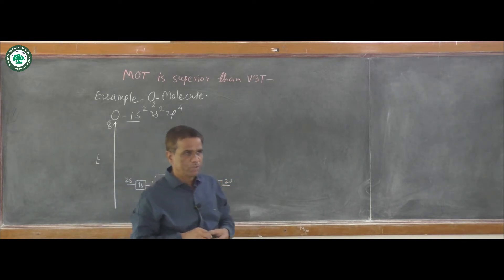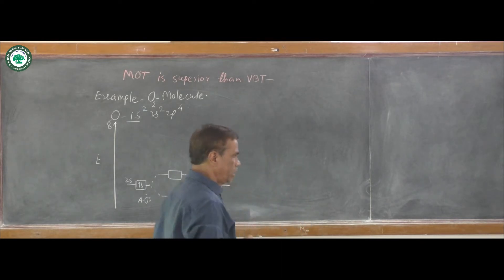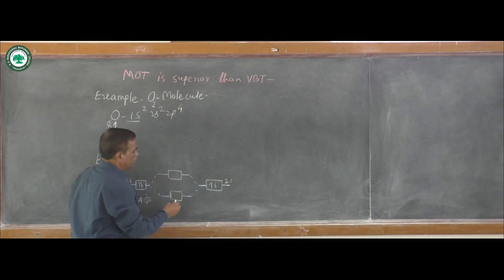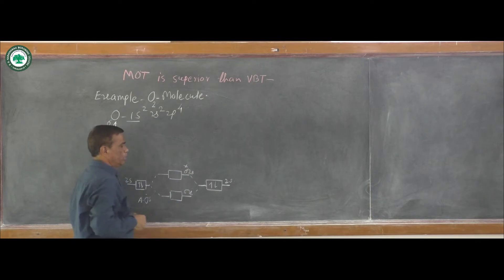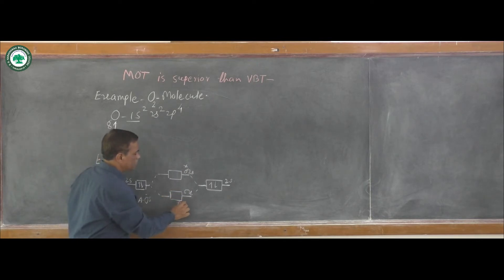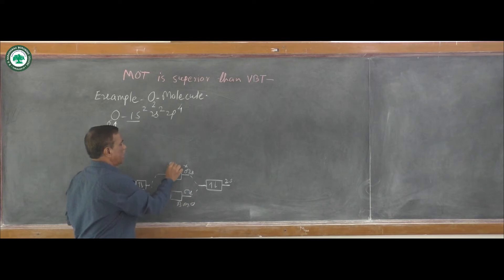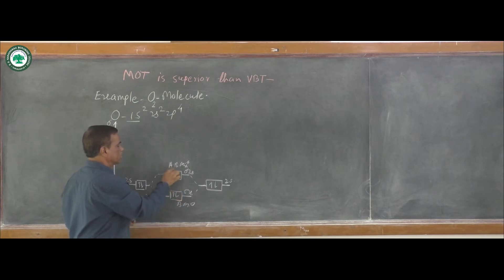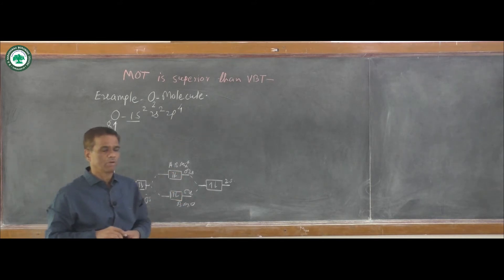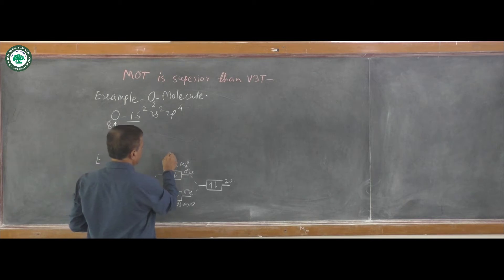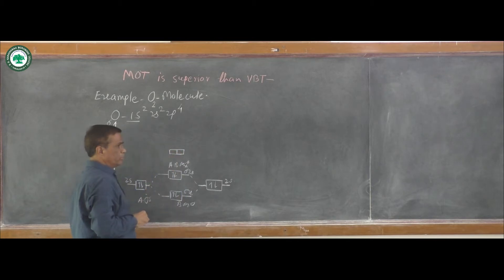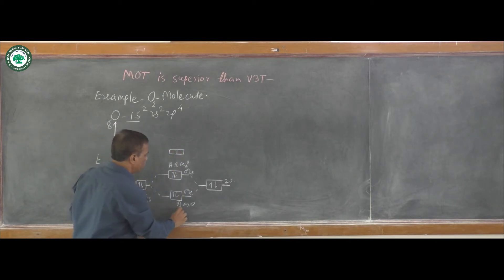Each 2s atomic orbital contains two electrons. When these two atomic orbitals combine, there is formation of sigma 2s (bonding molecular orbital) and sigma star 2s (anti-bonding molecular orbital). In the bonding molecular orbital two electrons are there. Then there is a combination of p orbitals.